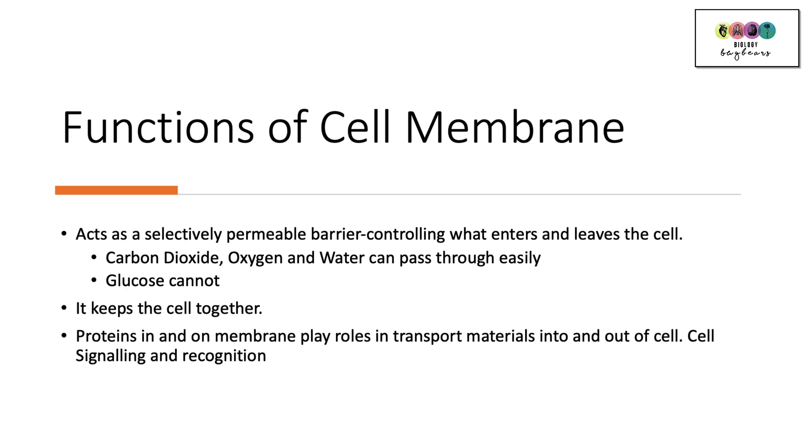The functions of the cell membrane are very important. The first one is that it acts as a selectively permeable barrier. So this is really important. It controls what enters and leaves the cell. So selectively permeable. It's going to allow some substances like carbon dioxide, oxygen and water to pass through easily, but it's going to stop others such as glucose. The cell membrane keeps the cell together. It maintains the cell's integrity.